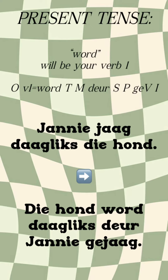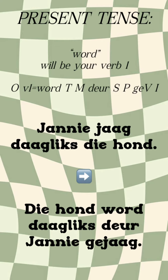With past tense, it is important that your verb one will now be 'is'. And that is sometimes confusing. Just remember that 'is' actually fully replaces 'het'. There is no 'het' in the Lydende Vorm. So it's: object, verb one is 'is', time, manner, dir, subject, place, ge, verb, infinitive.